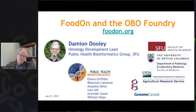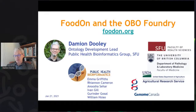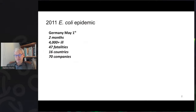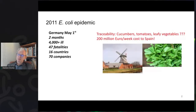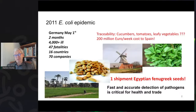The Public Health Bioinformatics Group at SFU that I work with has a group of ontologists supporting this effort. I'd like to thank Genome Canada and the U.S. Department of Agriculture Agriculture Research Service for being generous funders of the work. I'll explain how we came to this problem, which is exemplified by this 2011 E. coli epidemic that struck Germany initially and took about two months to solve — 4,000 people fell ill, 47 fatalities, 16 countries and 70 companies involved. The problem was traceability: the data systems just weren't there to go from the outbreak back to the product source. Spain was falsely implicated; people were wondering if it was cucumbers or tomatoes or leafy vegetables. Eventually it was traced back to a single shipment of fenugreek seeds.